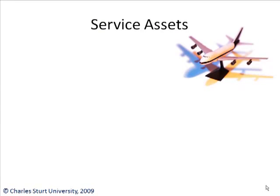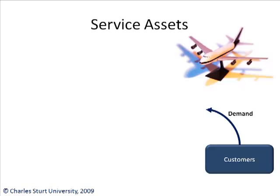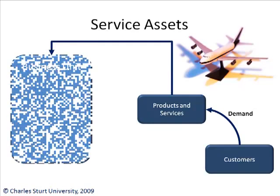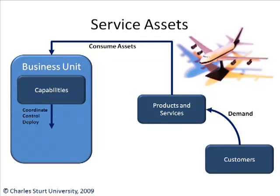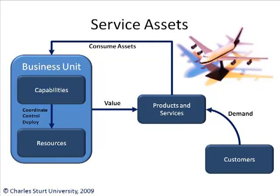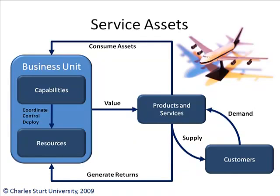How do these service assets actually work and fit into the model of service management? Say I'm a large airline company and I want to allow my customers to book their flights online. As the airline company, I have a demand for an online booking service. IT — the business unit IT — needs assets to provide that service, in the form of capabilities that are able to coordinate, control, and deploy the resources needed to deliver products and services to the customer. If it all works, I can provide the online booking service, and if the customer is happy, they will pay for it, generating returns.